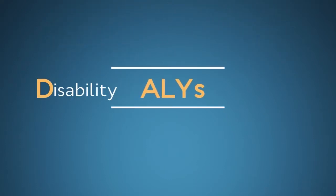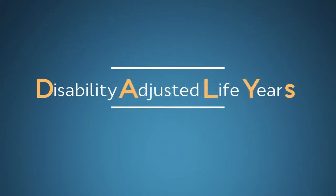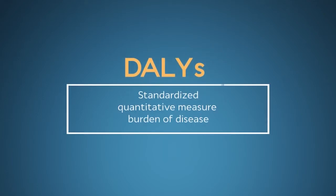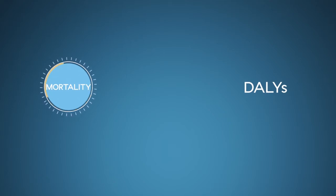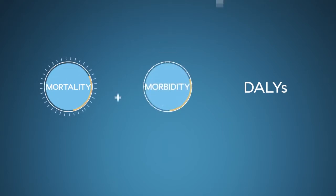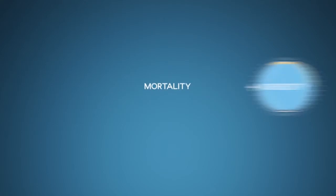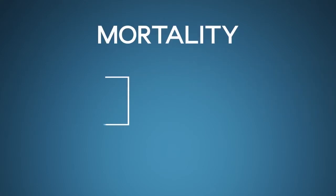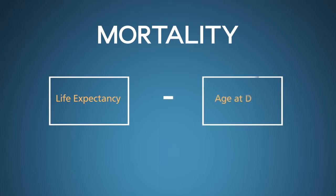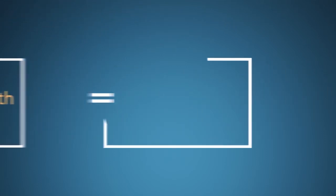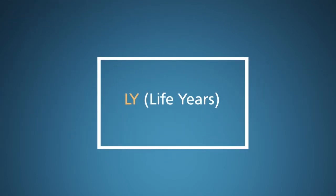DALY stands for Disability Adjusted Life Years. Simply put, a DALY is a standardized, quantitative measure of the burden of disease. It combines mortality — the years of life lost due to premature death — with morbidity, a measure of all nonfatal clinical effects, such as illness episodes or chronic disability. Mortality is easy to quantify: it's simply the life expectancy of a healthy individual at the time he or she becomes ill, minus the age at death of an individual with the disease being studied. Think of this as the LY in DALY, or life years lost due to disease.